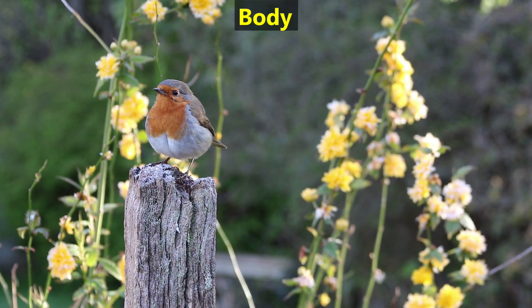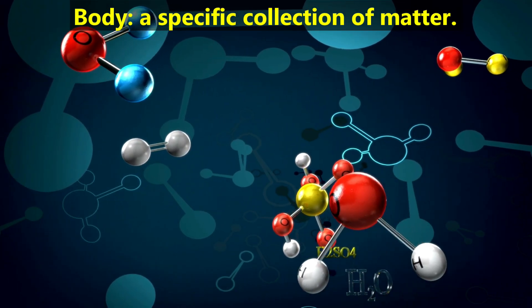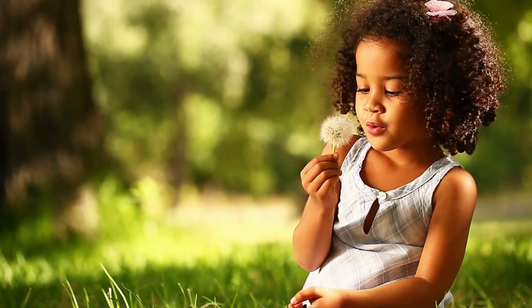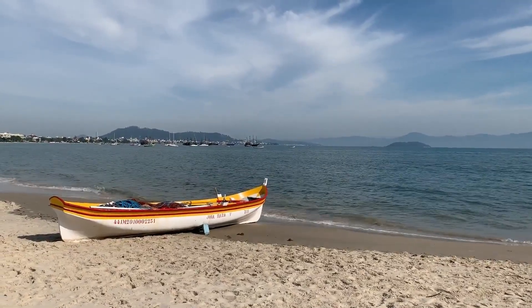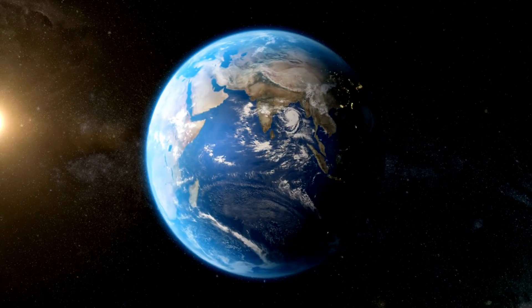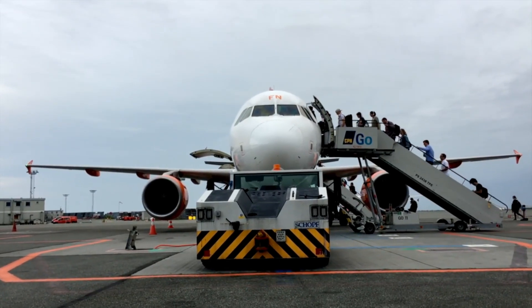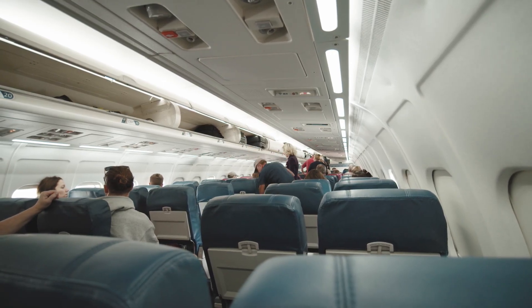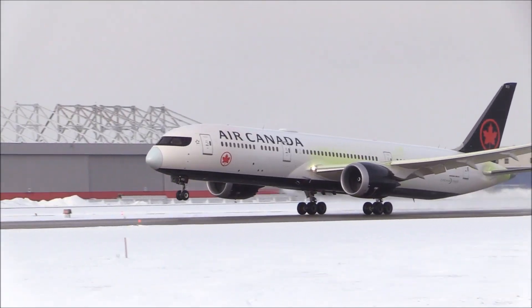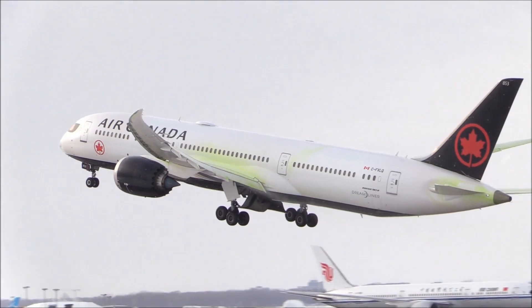Next, we'll discuss the word body. In science, we use the word body to refer to a specific collection of matter. A body could be living, like people and plants, or a body could be non-living, such as a boat. A body could be very small, like a single grain of salt, or very large, like an entire planet. We can define specific bodies based on our needs. For example, even though there are a lot of individual people in this plane, when we're studying the plane's motion, we consider everyone inside it plus the plane to be just one body.